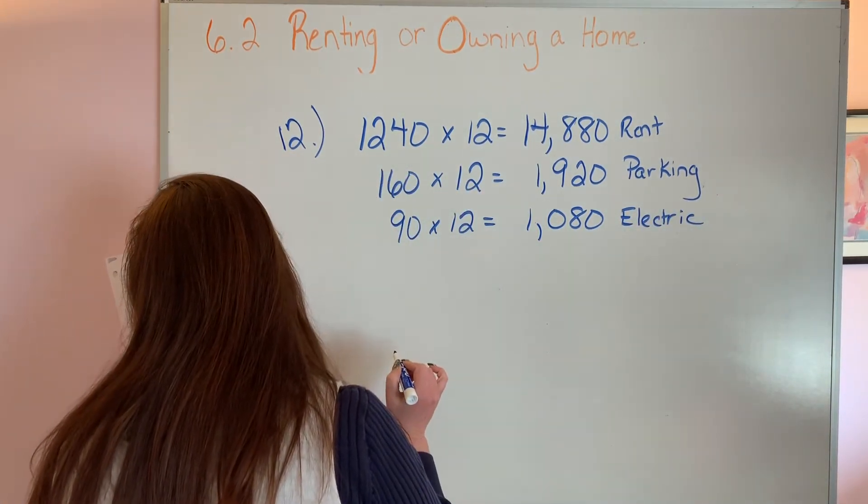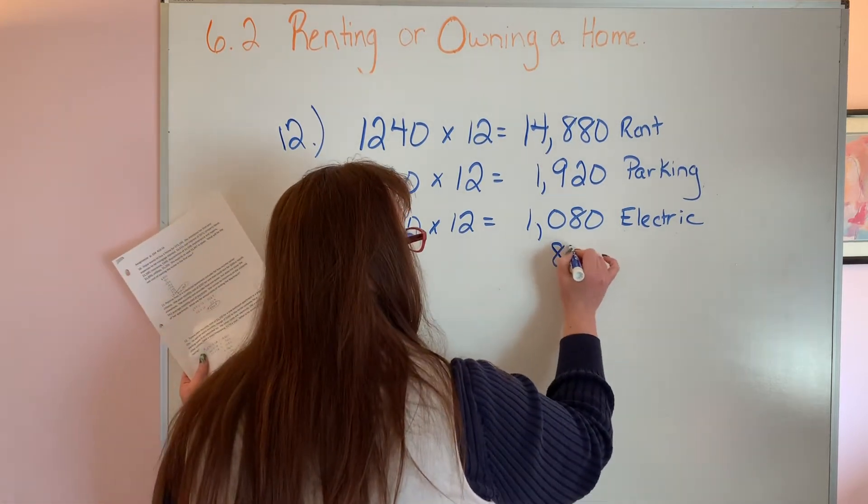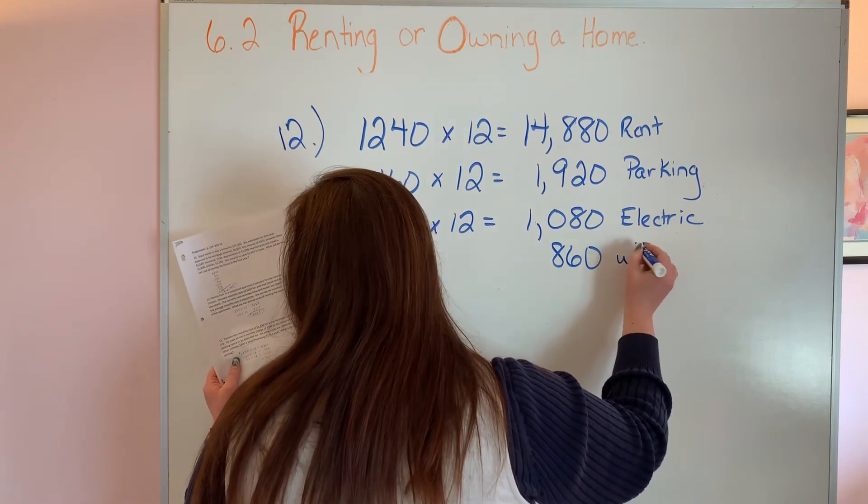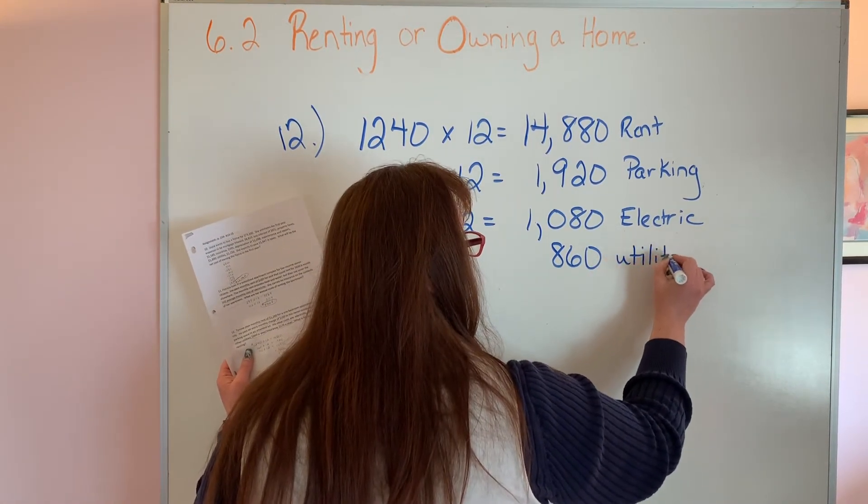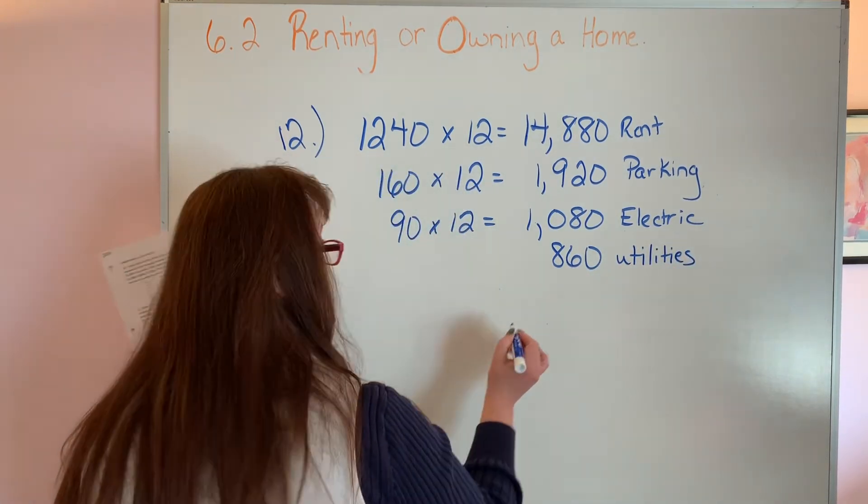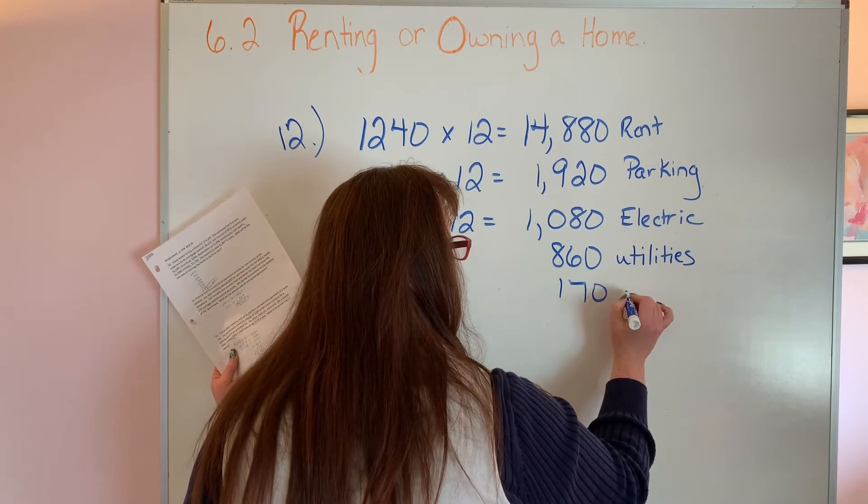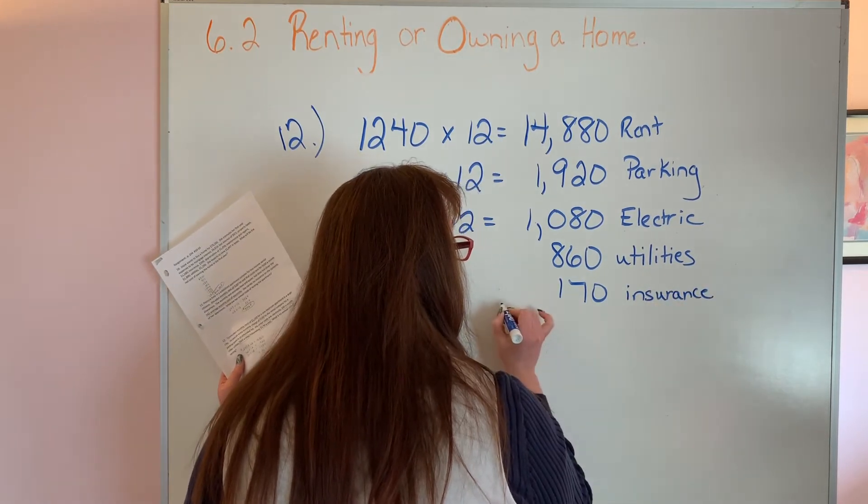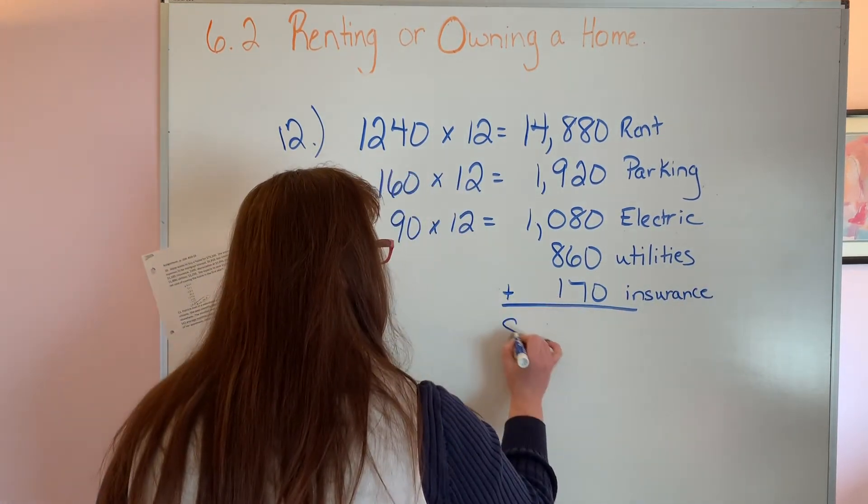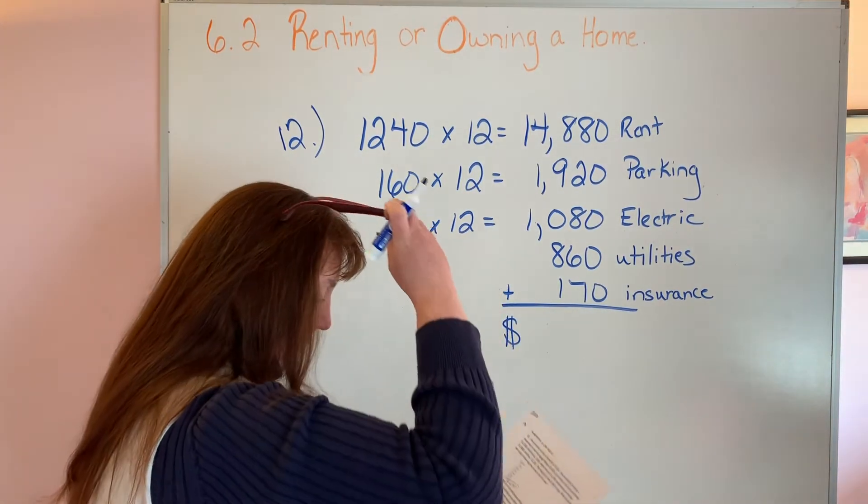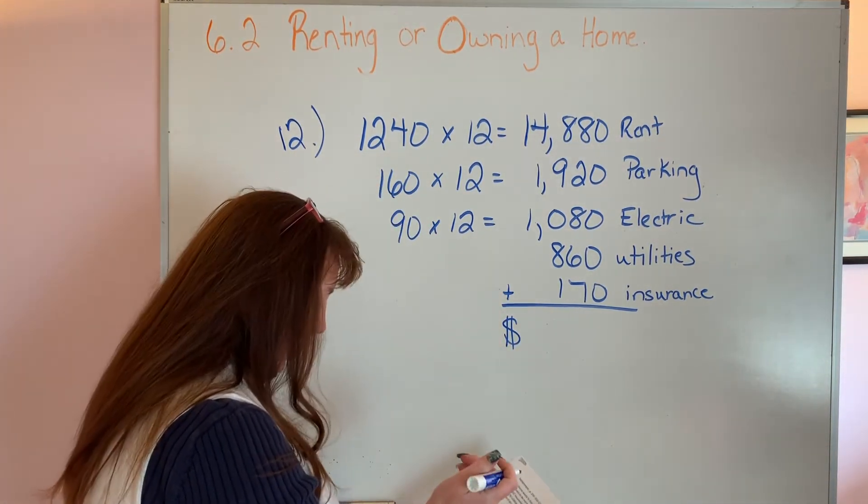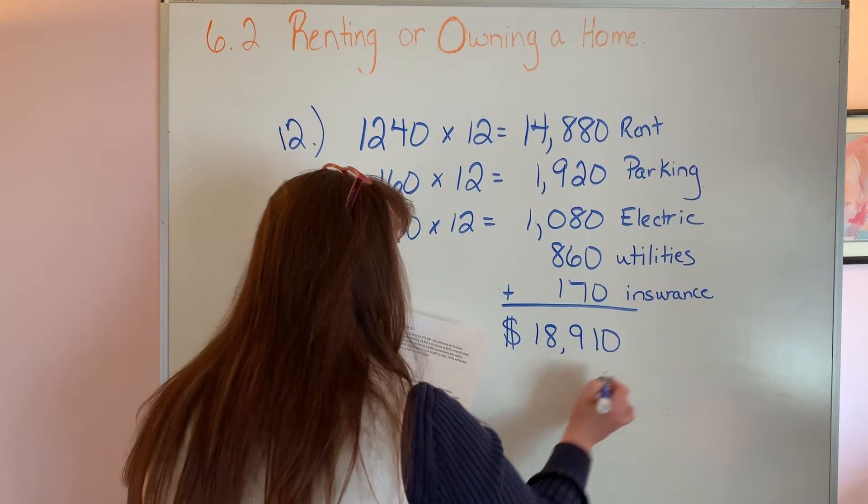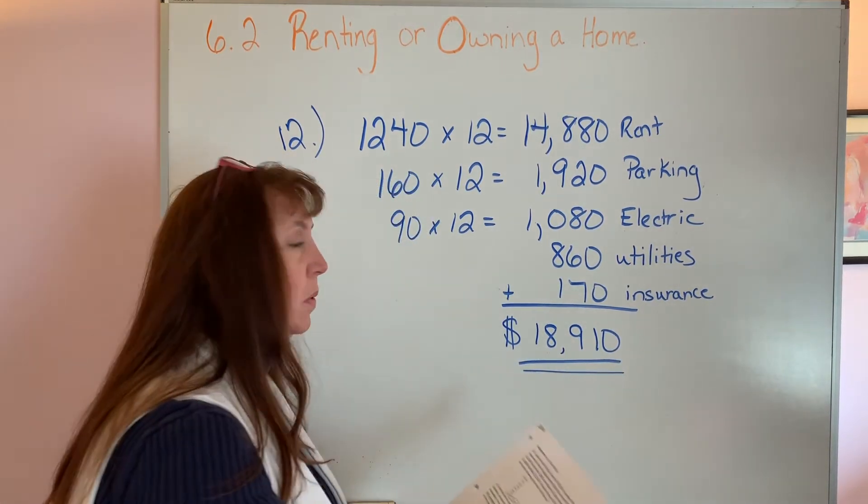Next we have the $860 for other utilities. That one is for the year, so we're not timesing that by 12. And the last thing they talk about is the insurance for $170 a year. Again, we're not timesing it by 12 because it's already for the year. Add those all together and you get a total annual cost of renting of $18,910 cost for renting this apartment for the year.